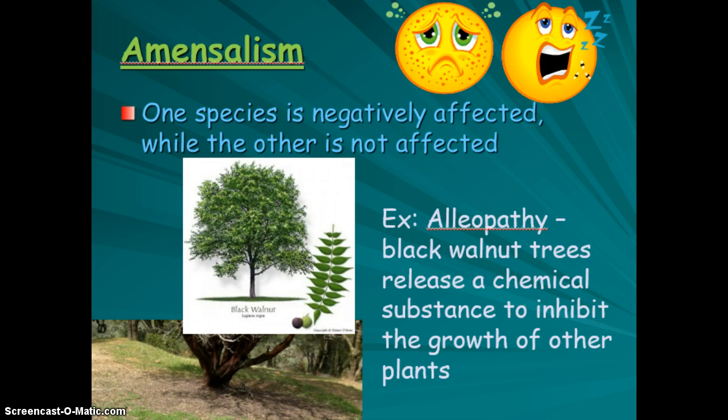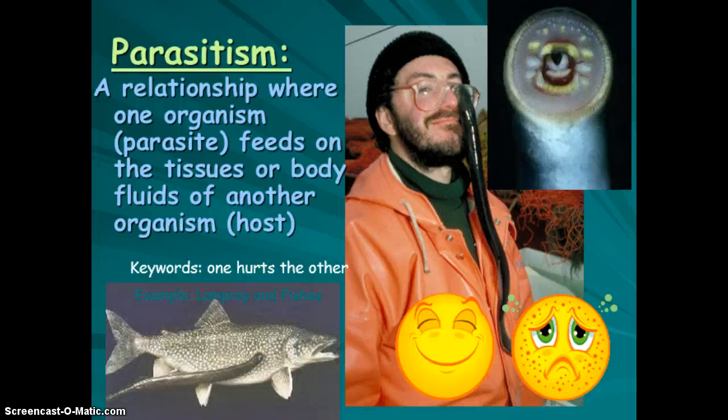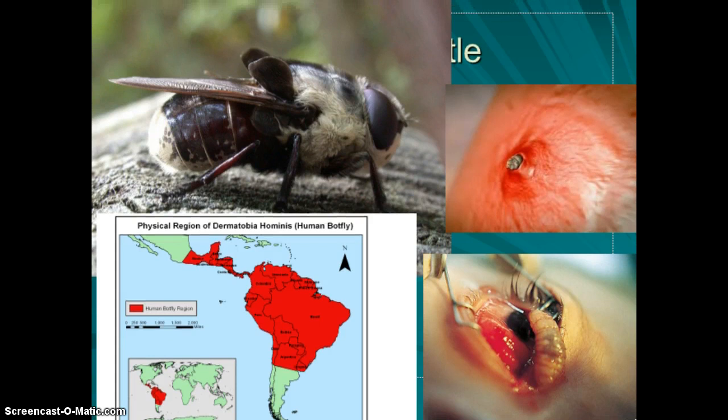Parasitism is one of the most common examples of amensalism. One organism — the parasite — feeds on the body of another organism called the host. Examples include the lamprey, a jawless fish that sucks blood from other fish, and the botfly, which attacks humans, horses, and livestock by laying eggs under the skin where larvae hatch and eat their way out.